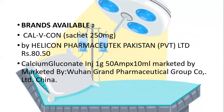Available brands include Calvicon — a sachet of 250 mg by Helicon Pharmaceuticals, Pakistan (BVT Limited), priced at approximately 80.50 rupees. There is also a calcium gluconate injection of 1 gram per 10 ml, marketed by Wuhan Grand Pharmaceuticals Group Co. Limited, China.